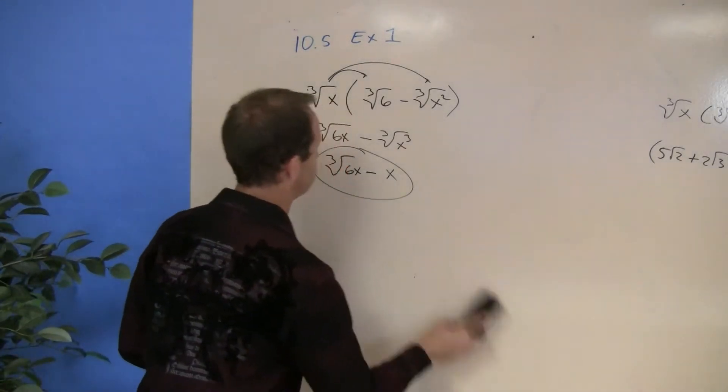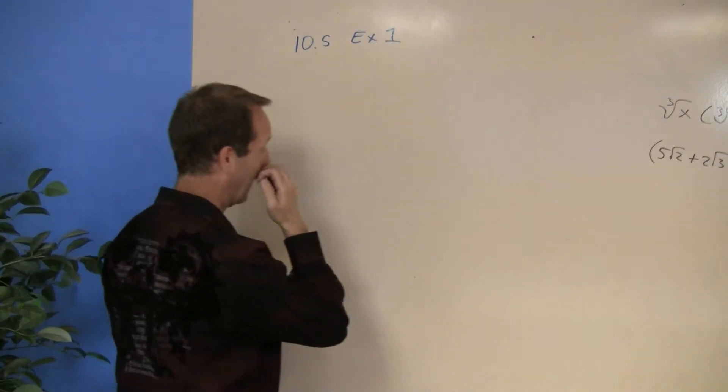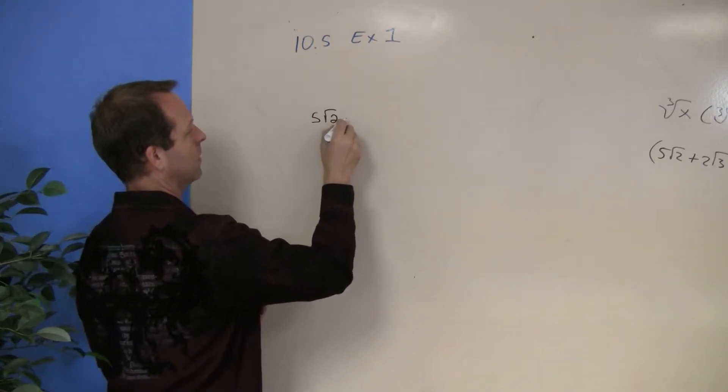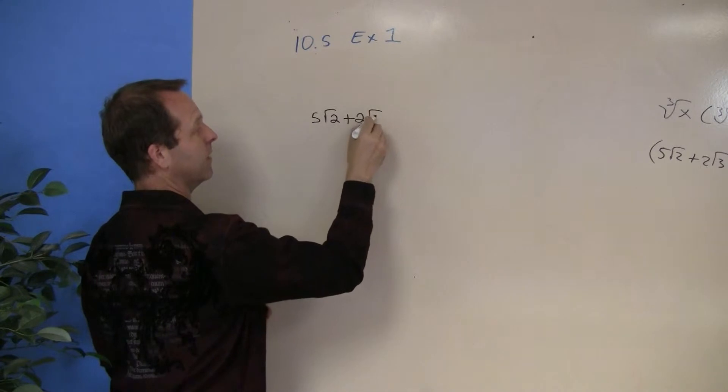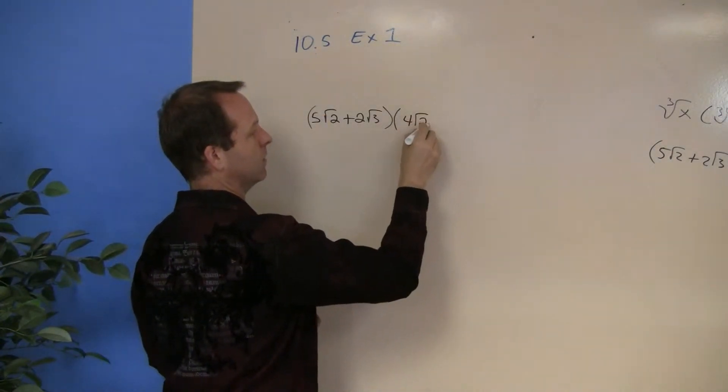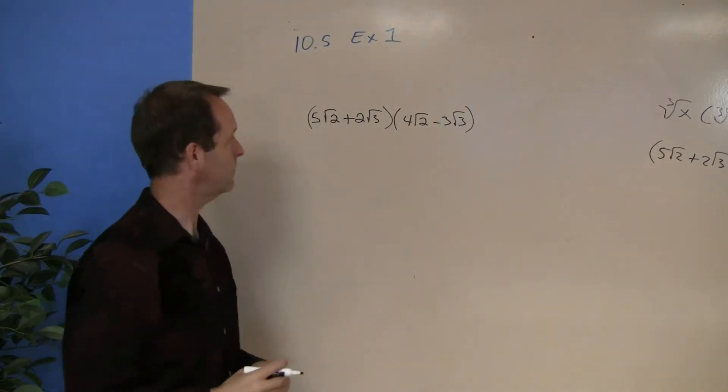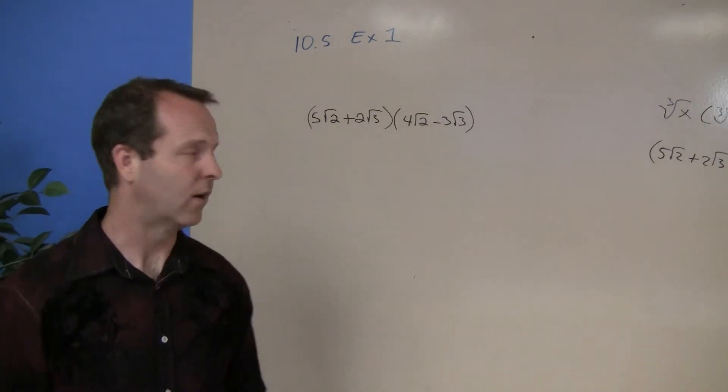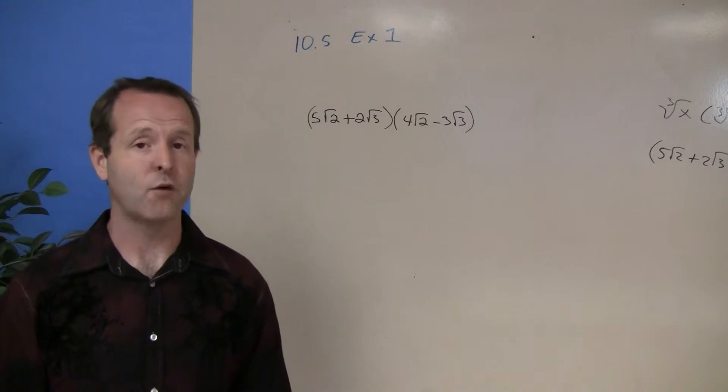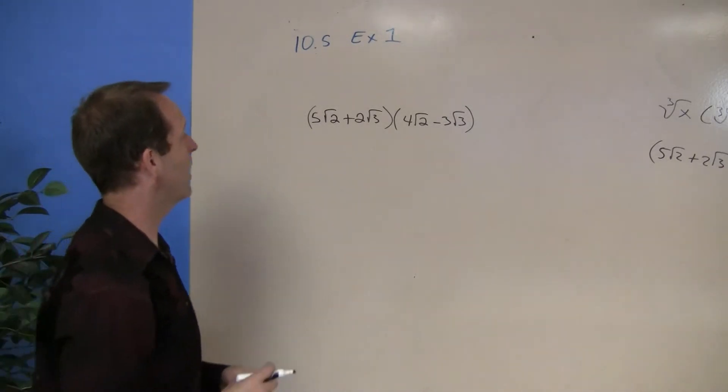One last example. Say I have 5 root 2 plus 2 root 3, and that entire expression multiplied by 4 root 2 minus 3 root 3. A binomial times a binomial, if you will. Well, it's setting up to be almost a classic FOIL situation. First times first, outers, inners, and last. So let's go ahead and do that, where I'm going to multiply the first term times the first term.